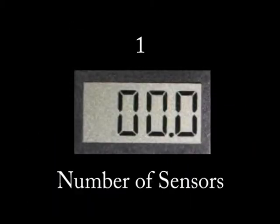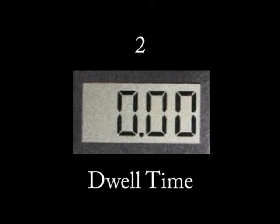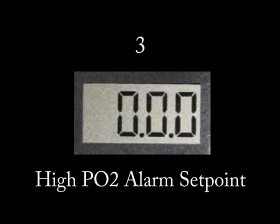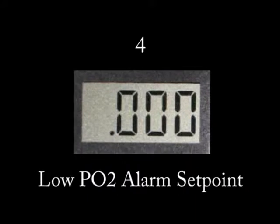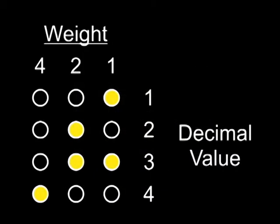Step one is to change the number of sensors attached to the display board. Step two is to modify the amount of dwell time between displaying subsequent sensor readings. Step three is to change the high PO2 alarm set point, and step four is to change the low PO2 alarm set point. Astute electronic types will note that the decimal point position can be interpreted as a binary value which reflects the number of the menu step we're at. This format is used often as part of the Gorilla Diving Products PO2 monitor system.